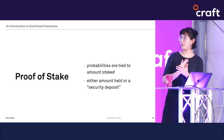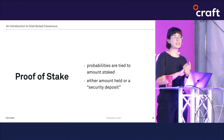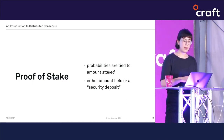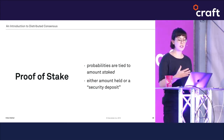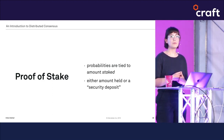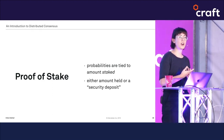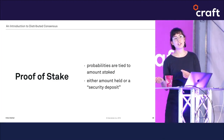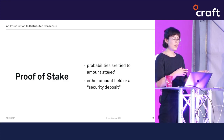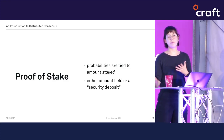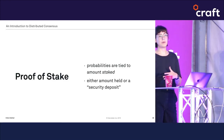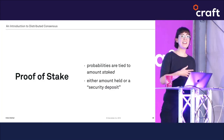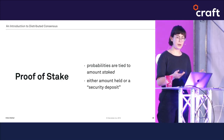Some proof-of-stake algorithms are like proof of work in that they determine the next proposer node in a probabilistic way, but whereas in proof of work nodes can increase their odds by increasing their hash power, in proof of stake nodes increase their odds by increasing their stake. Depending on the implementation, this can either be the amount the node holds or the amount put into some kind of security deposit. If a proposer node misbehaves, it can be fined through its security deposit.